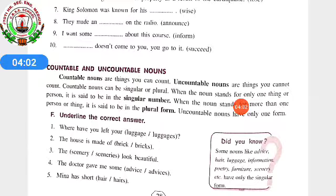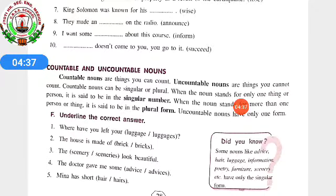When the noun stands for only one thing or person, it is said to be in the singular number. When the noun stands for more than one person or thing, it is said to be in the plural form. If we are saying one person's name or taking one thing, then it will be singular. If we are taking more than one person or thing, it will be in the plural form. Uncountable nouns have only one form — no singular or plural, just one form.